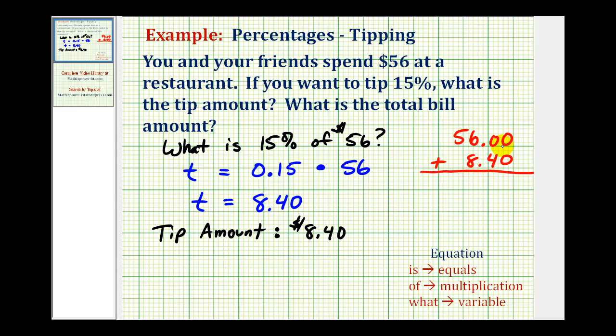Notice how we line up the decimal point and the corresponding place values. Next we bring the decimal point down to our sum, and then add as we normally would. Zero here, four here, six plus eight is fourteen, carry the one. So the total bill is sixty-four dollars and forty cents.